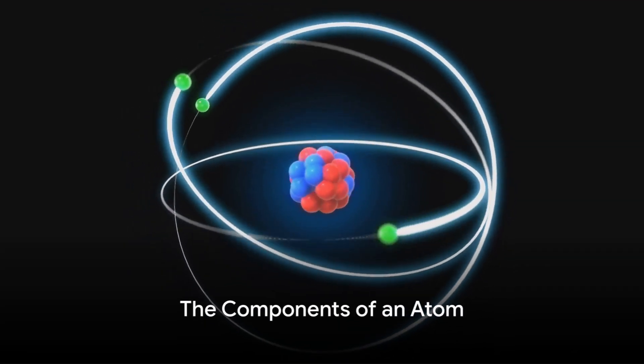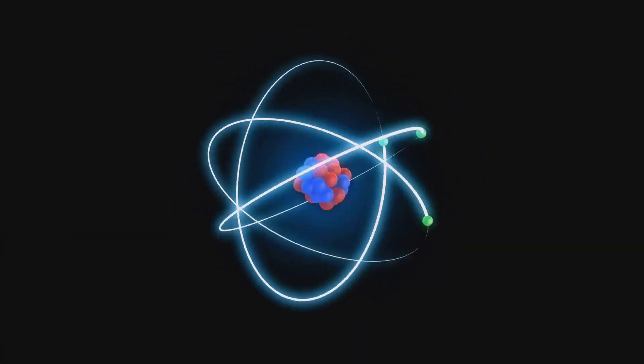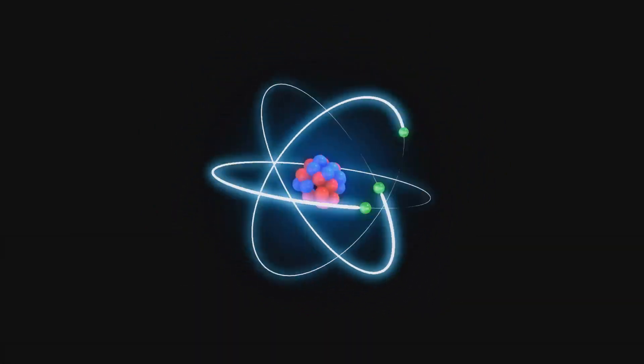Delving deeper into the structure of an atom, we come across three primary components: protons, neutrons, and electrons.